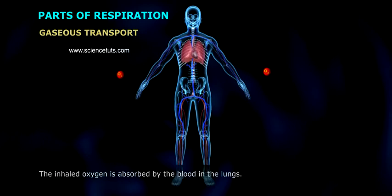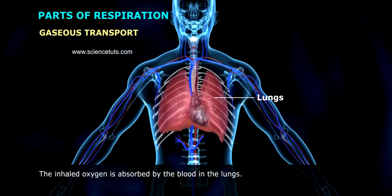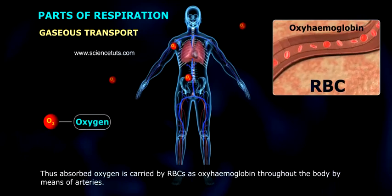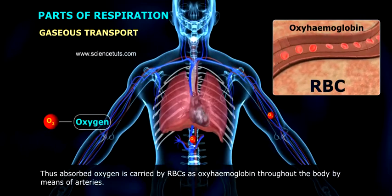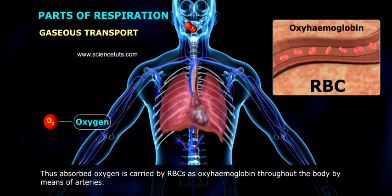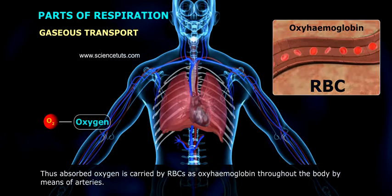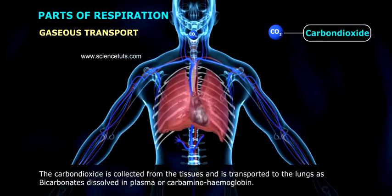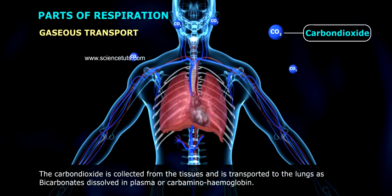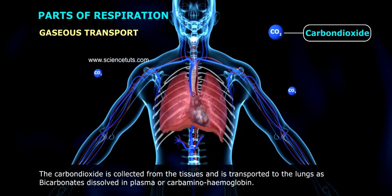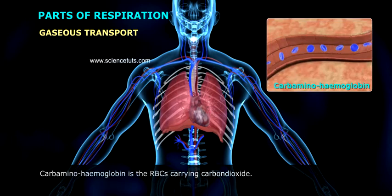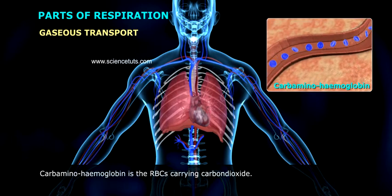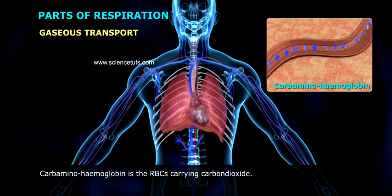Gaseous Transport. The inhaled oxygen is absorbed by the blood in the lungs. The absorbed oxygen is carried by RBCs as oxyhemoglobin throughout the body by means of arteries. Carbon dioxide is collected from the tissues and transported to the lungs as bicarbonates dissolved in plasma, or as carbaminohemoglobin. Carbaminohemoglobin is the RBCs carrying carbon dioxide.